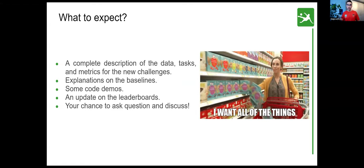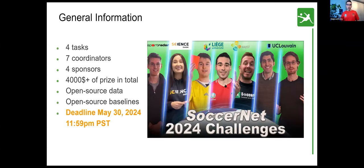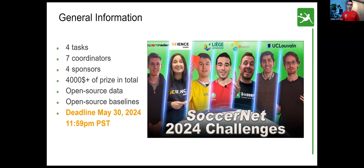This is a bit of general information about the challenges this year. The 2024 edition comprises four different tasks, and we have seven coordinators from different institutions helping organize the different challenges — people from Sportradar, NASC Science, University of Liège, KAUST, and UC Luba. Don't hesitate to directly contact those people as well; their names will be written at the bottom of each slide.